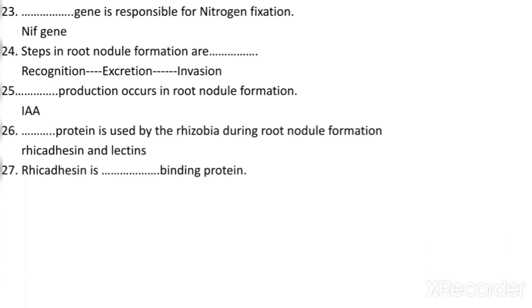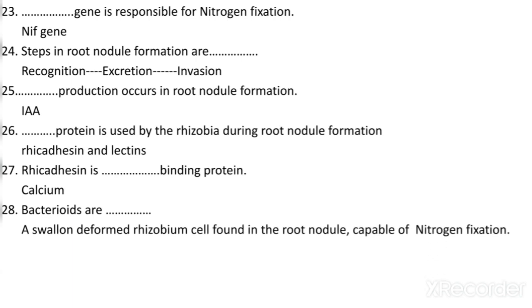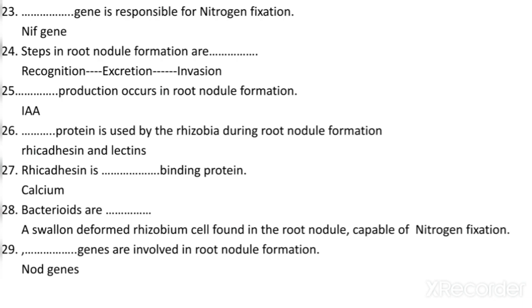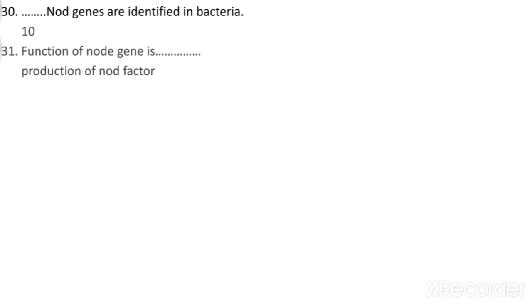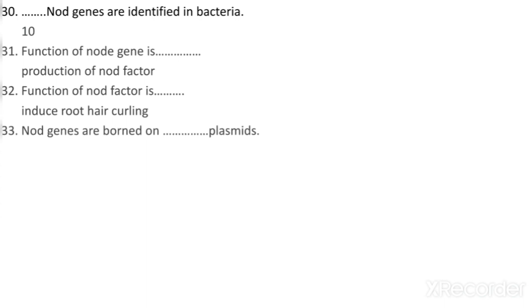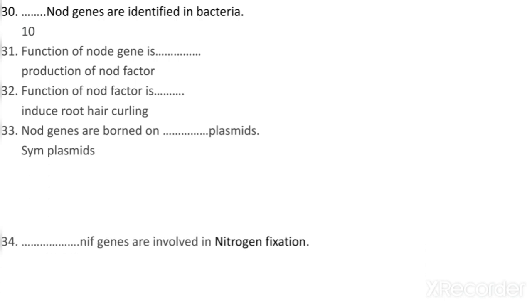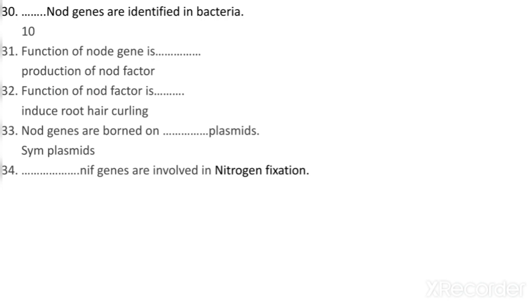Rhicadhesin is which type of binding protein? It is a calcium-binding protein. What are bacteroids? Bacteroids are the swollen, deformed Rhizobium cells found in the root nodule that are capable of nitrogen fixation. Which genes are involved in root nodule formation? Nod genes are involved. How many Nod genes are identified in bacteria? 10 Nod genes are identified. What is the function of Nod genes? The function is the production of Nod factors. What is the function of Nod factors? Nod factors induce root hair curling. Nod genes are borne on Sym plasmids. 22 NIF genes are involved in nitrogen fixation.